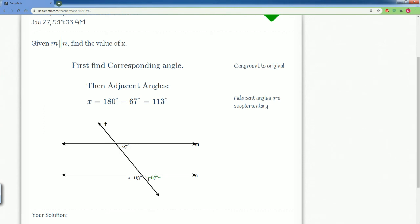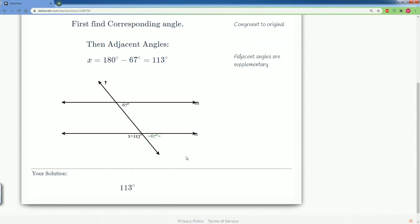You see how they brought the 67 down and they saw that these two have to be linear pairs, or the word supplementary. Good.